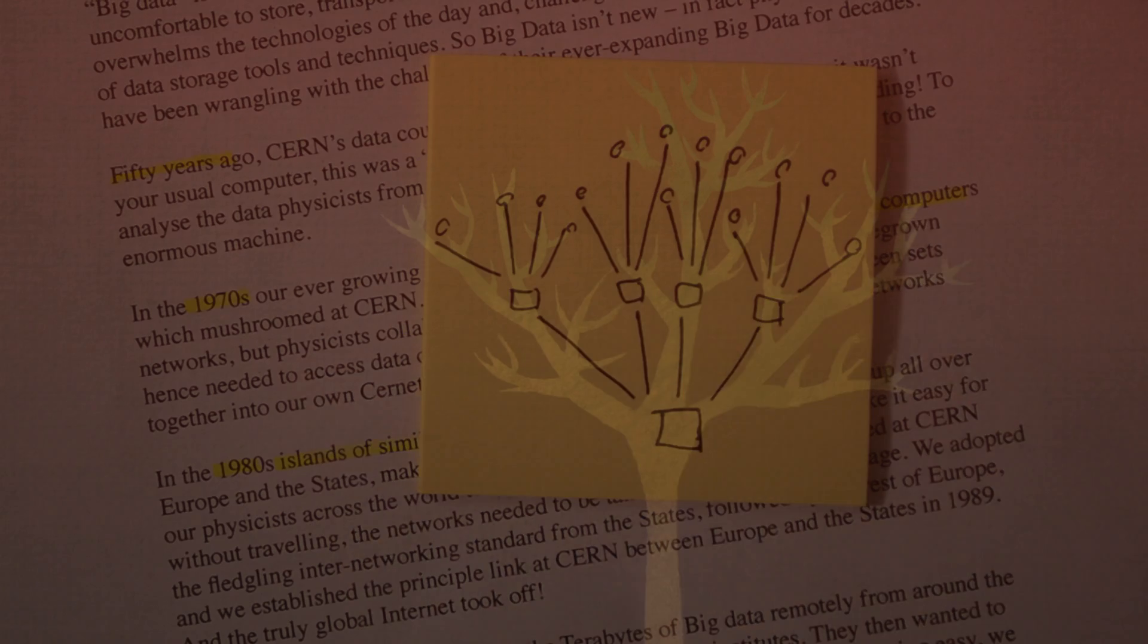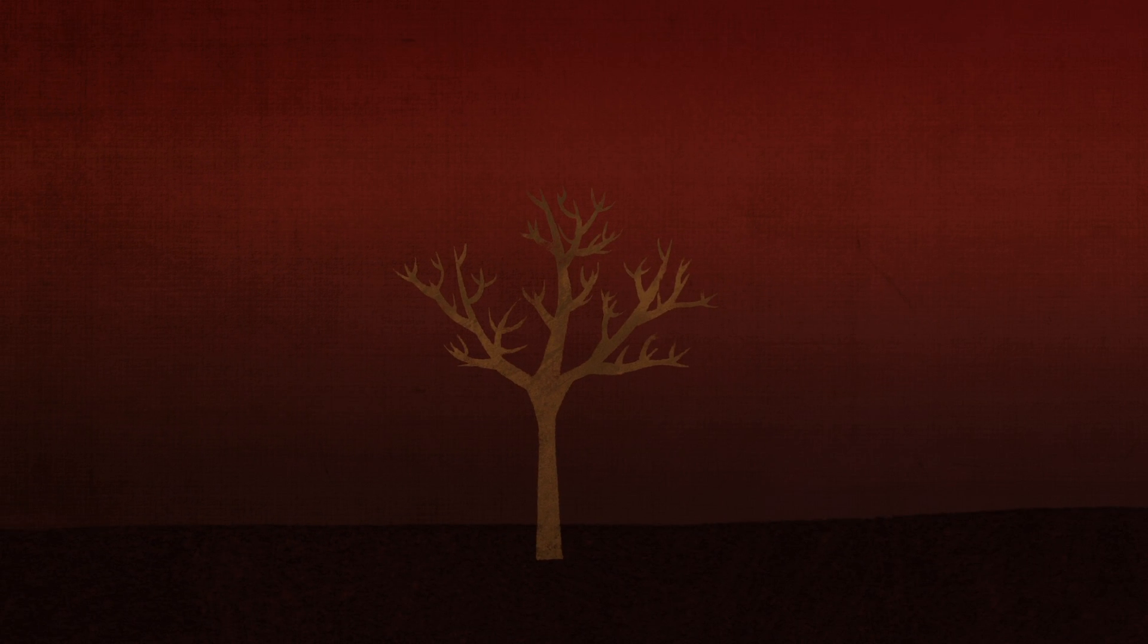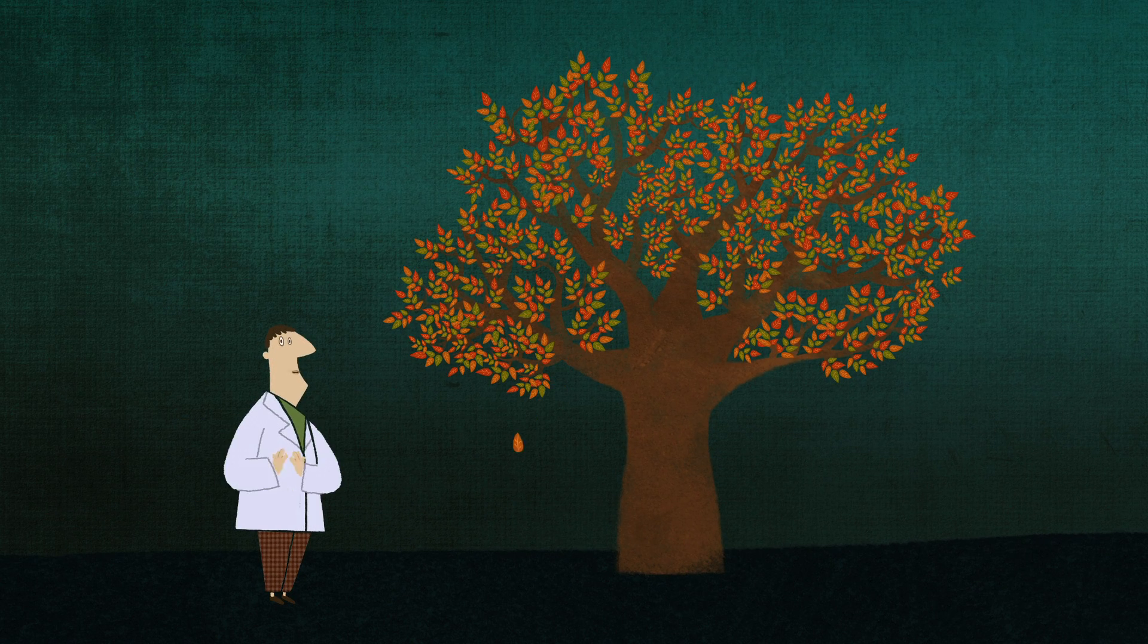Just like those computer networks, a tree grows and branches out to produce more leaves each year. And every year, just as the data accumulates and faces us with a challenge to find storage solutions, it gets harder to collect those piles of leaves when they fall off the tree. Aha! There's our visual metaphor.